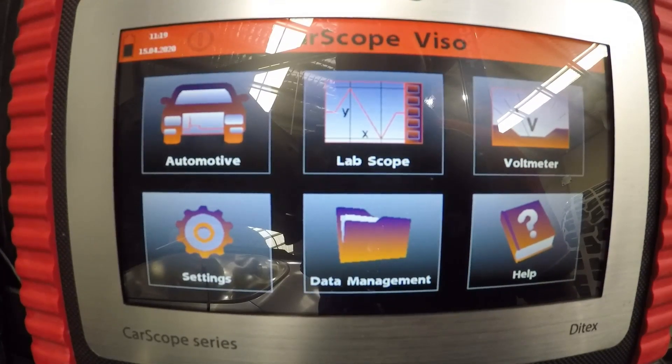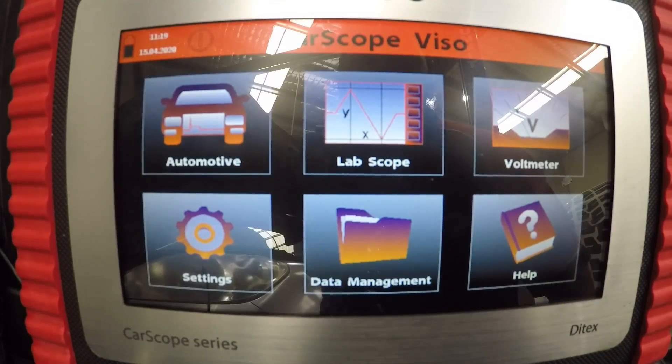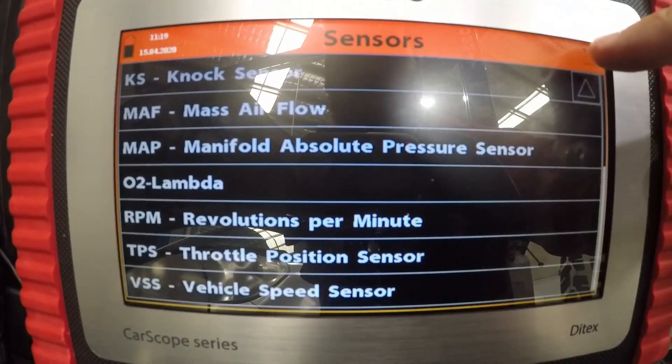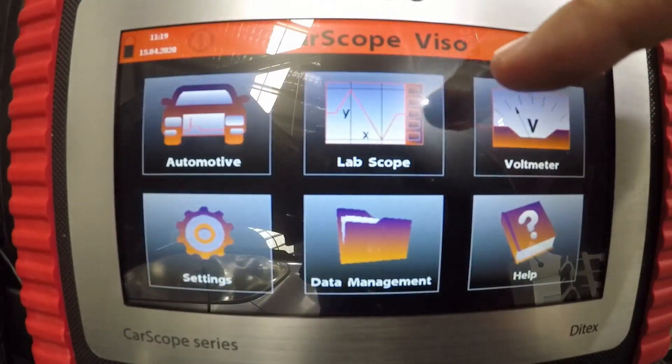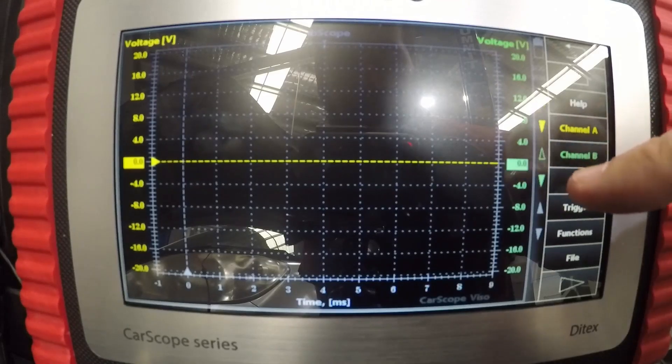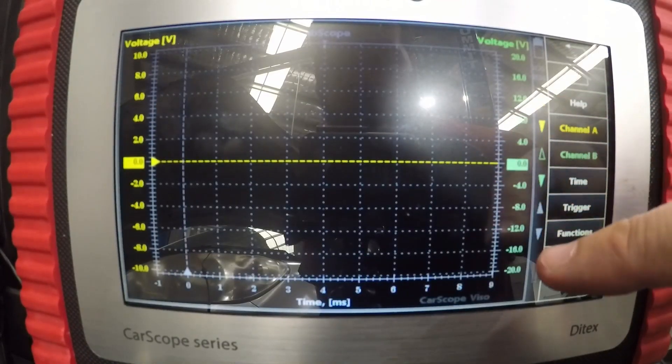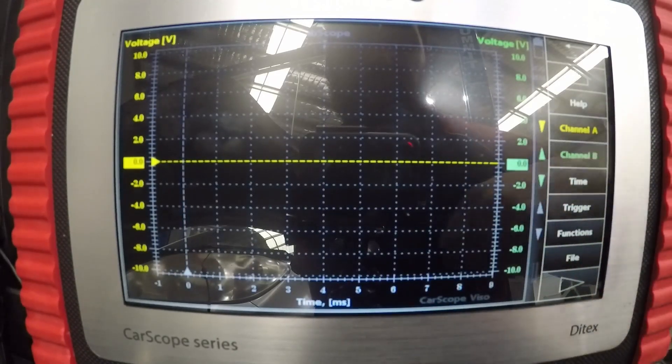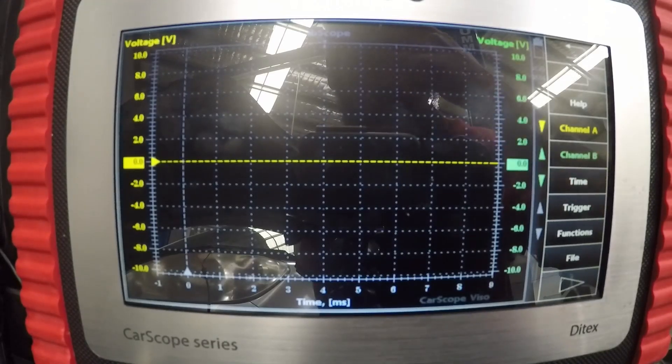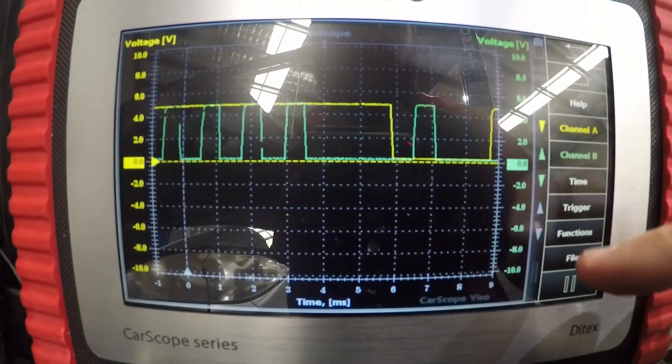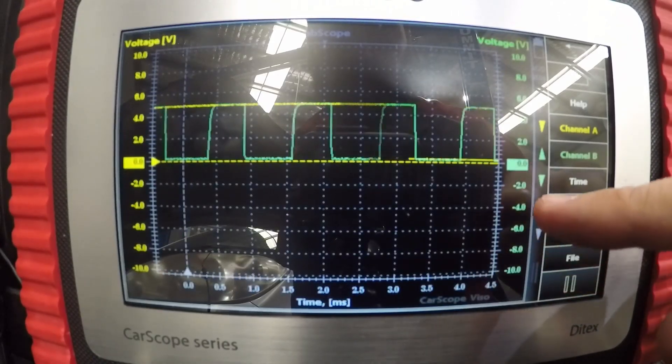All right guys, so first thing we're going to do is we're just going to do a cam and crank correlation on this. Now there is no preset that I know of in here. So it's a really simple test to do. We know they're five volt sensors, they're Hall effect sensors. So let's just go in here, go into the normal lab scope. We'll bring that down to 10 volts and we'll bring the second channel down to 10 volts. We can change the trigger, actually muck around with the trigger after. And we can change the time setting after. Let's just get it going.